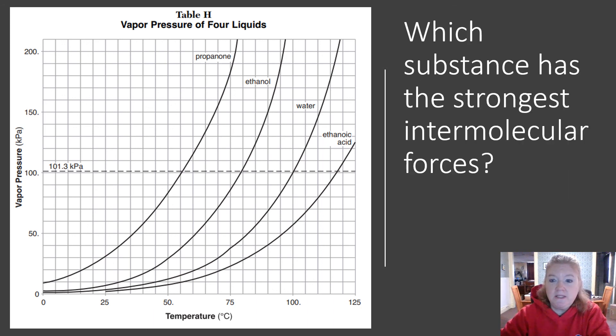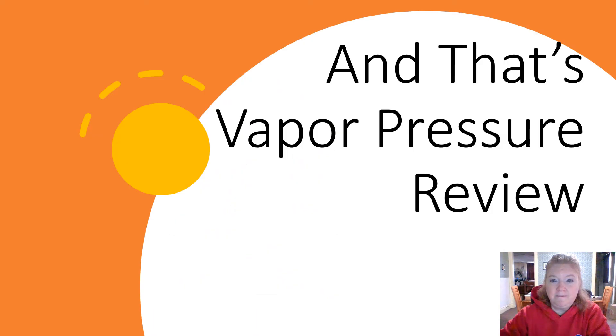Which substance has the strongest intermolecular forces? Highest boiling point means strongest intermolecular forces - ethanoic acid. That's it, that is a review of vapor pressure. Hope you learned something new today.